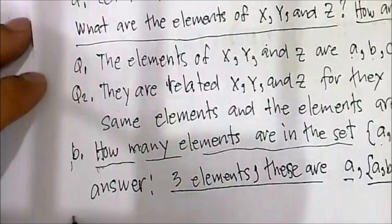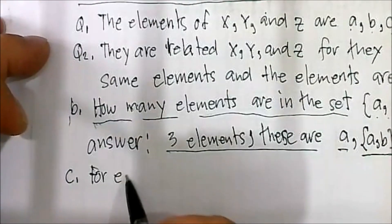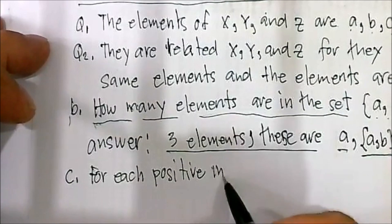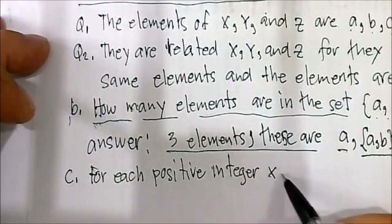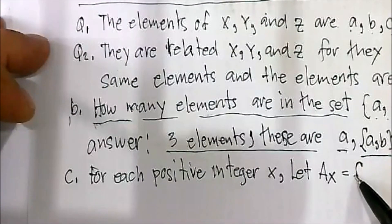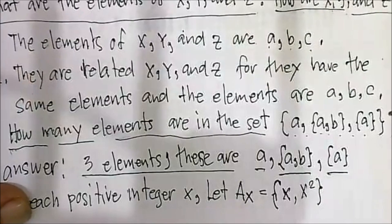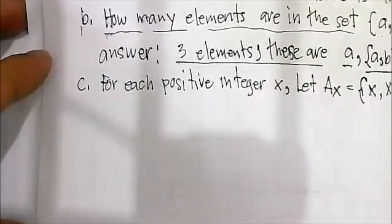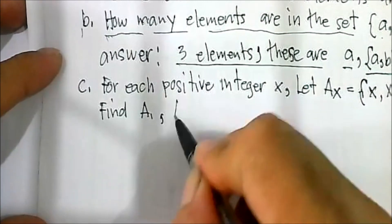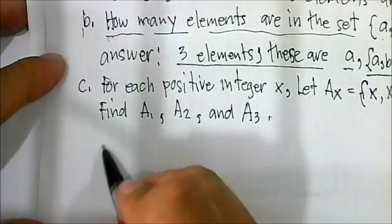Letter C: for each positive integer x, let A sub x be the set of x, x squared. Find A sub 1, A sub 2, and A sub 3.